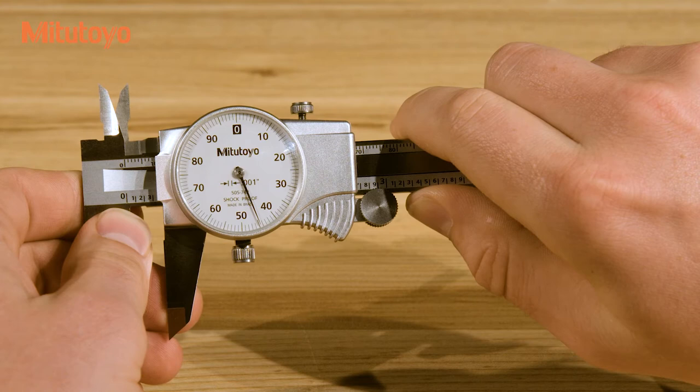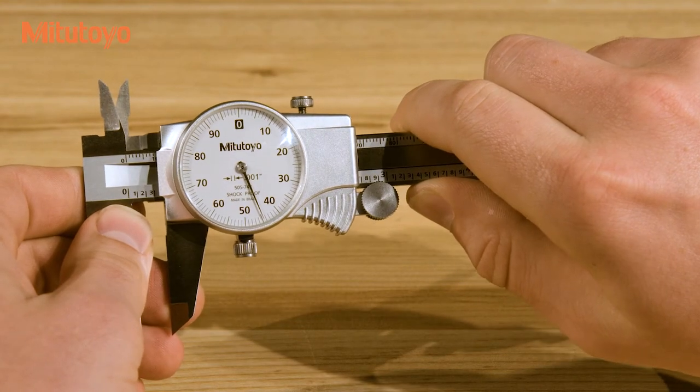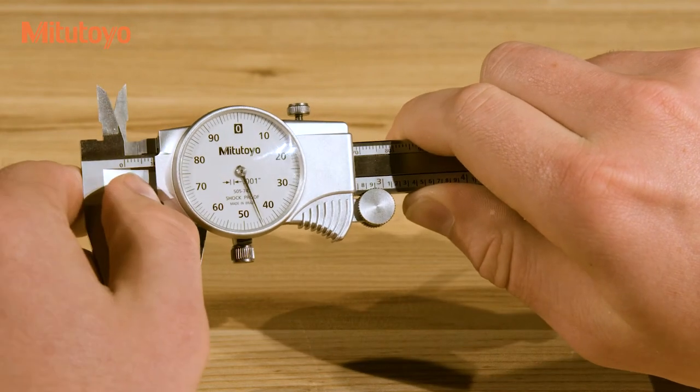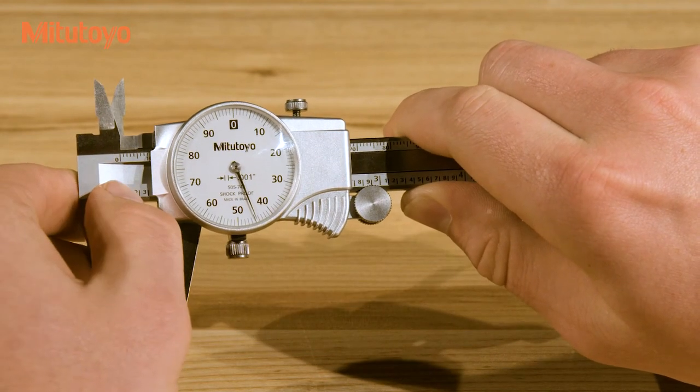Reading the caliper is a two-step process. First, look at the sliding jaw and note the last main scale graduation that it passed. In this case, that's the 3, so that's 0.3 inches.